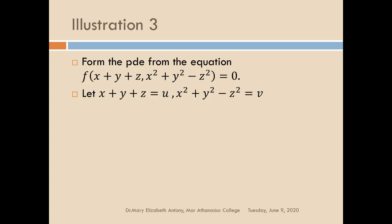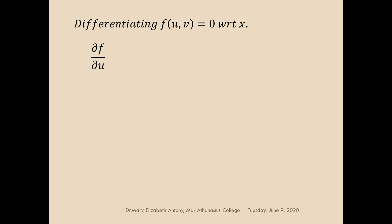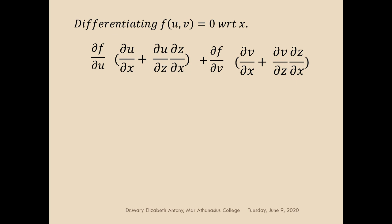Let's see another example: form the PDE from the equation f of x plus y plus z comma x squared plus y squared minus z squared equal to 0. This is a bit more complicated. We substitute u equal to x plus y plus z and v equal to x squared plus y squared minus z squared, so the equation becomes f(u, v) equal to 0. We partially differentiate with respect to x: dou f by dou u into dou u by dou x plus dou u by dou z into dou z by dou x plus dou f by dou v into dou v by dou x plus dou v by dou z into dou z by dou x equal to 0.